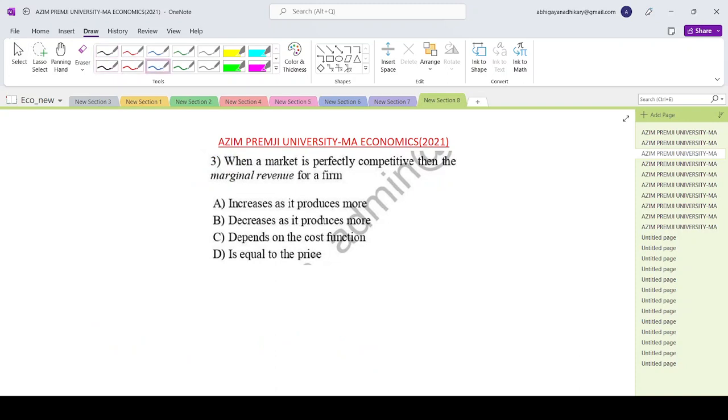Now coming to the Azeem Premji University question paper, question number 3. When a market is perfectly competitive, then the marginal revenue for a firm is increasing, decreasing, depends on cost function, or equals to price.